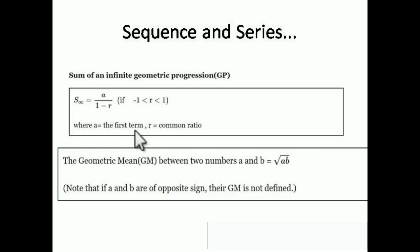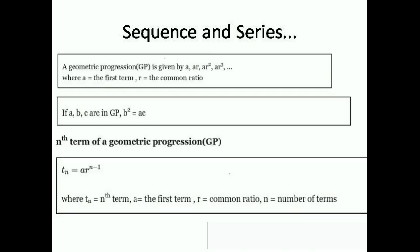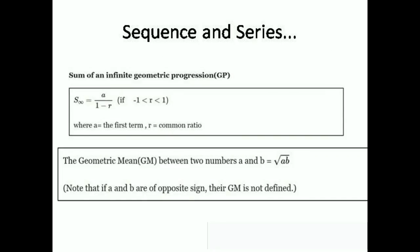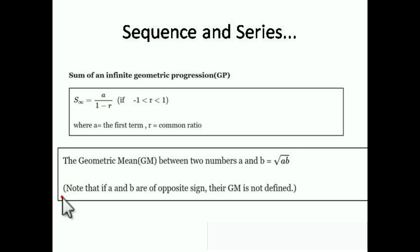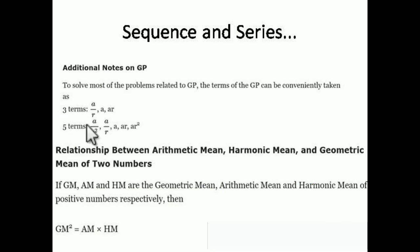The Geometric Mean is derived from the GP condition b² = ac, so b = √(ac). Similarly, the geometric mean between two numbers a and b is √(ab). Important note: if a and b have opposite signs, then the Geometric Mean cannot be defined.